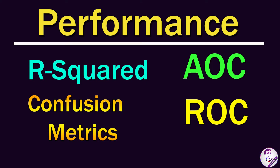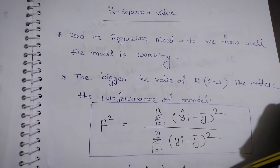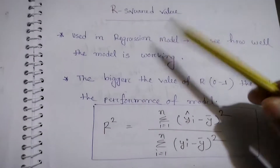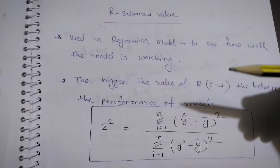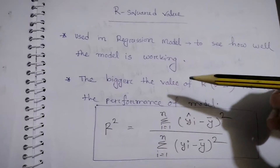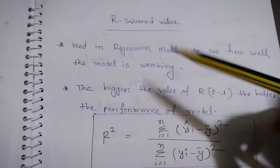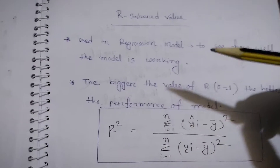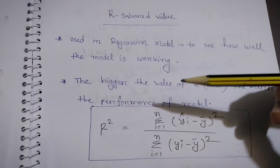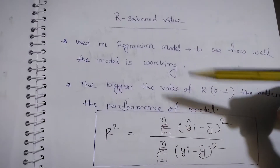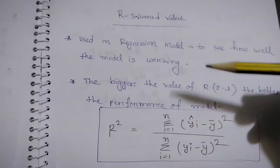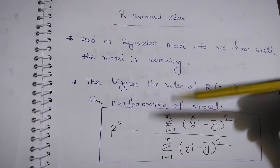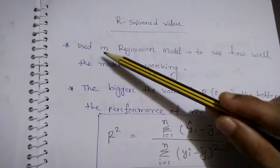Welcome to my channel. In this video I'm going to talk about performance analysis of machine learning algorithms. There are three types of machine learning algorithms: regression, classification, and clustering. The R-squared method is used to find the accuracy and performance metrics of regression type problems only, such as linear regression and multiple linear regression.